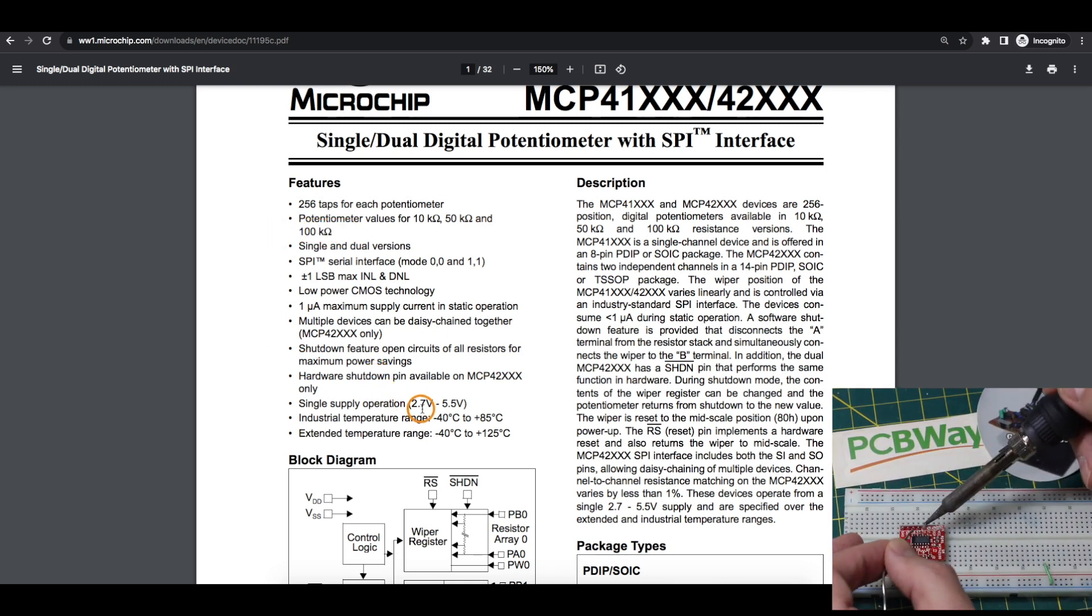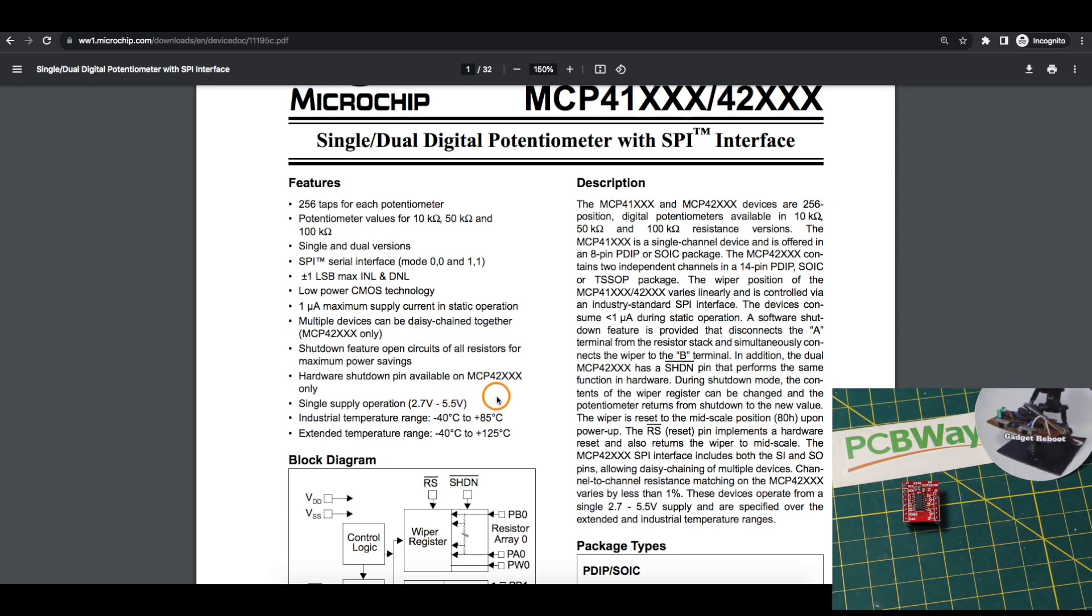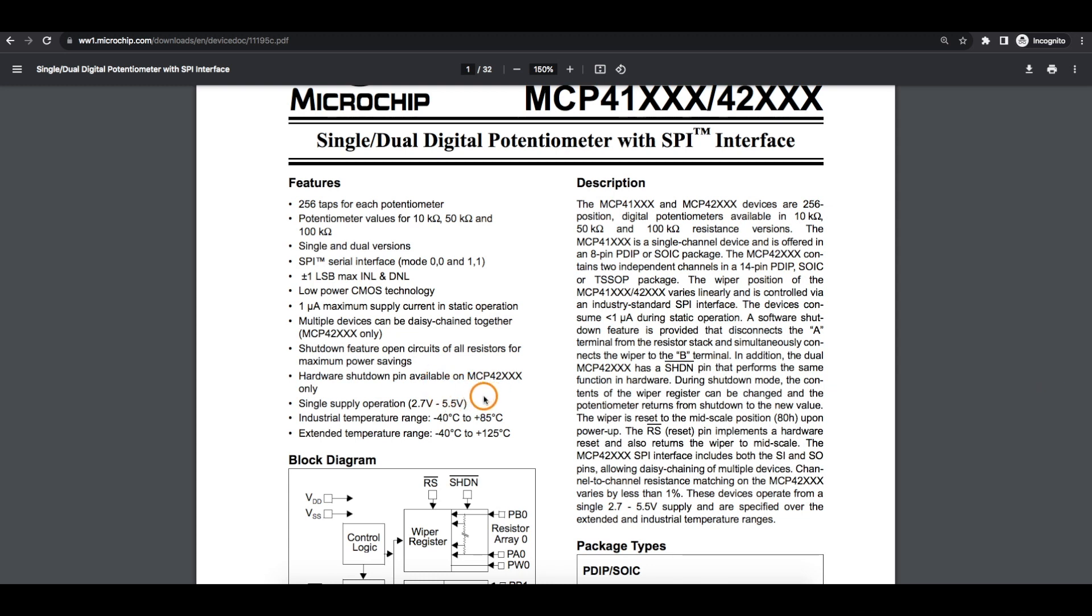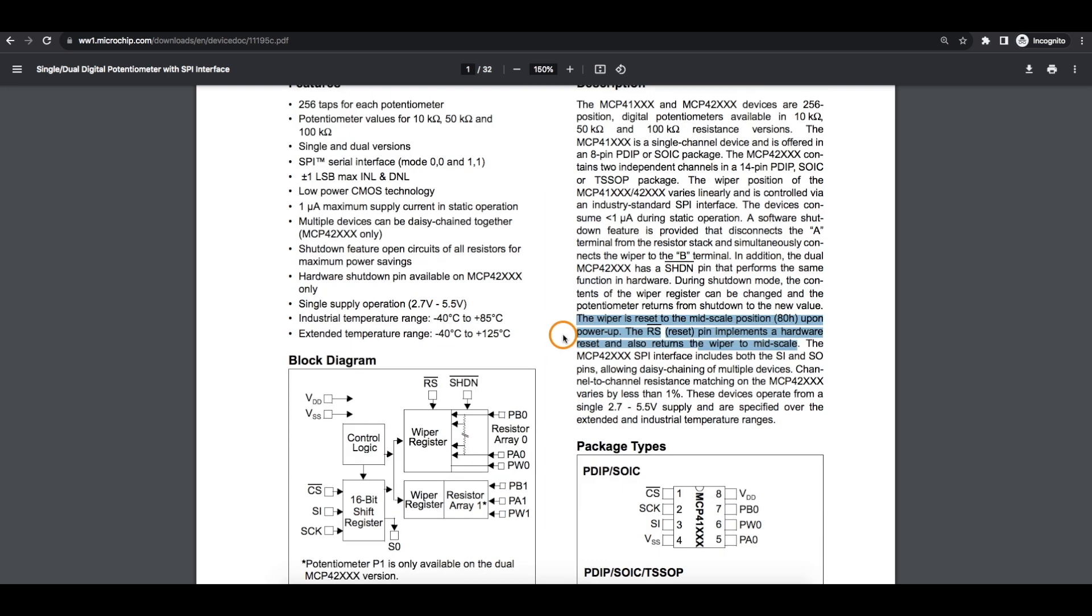This can run between 2.7 and 5.5 volts. So I'm going to be running it at 5 volts in my experiment with an Arduino Nano. And one feature of this part is upon power-up or otherwise being reset, the pot wiper ends up in the middle position as opposed to being in some random location or at one or the other extreme end of the pot. So at least it's in a known state and you can design a circuit to account for that.